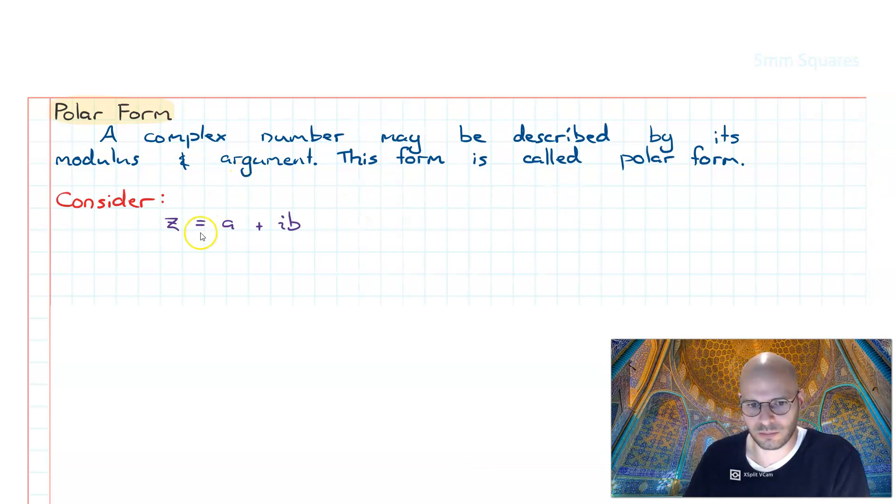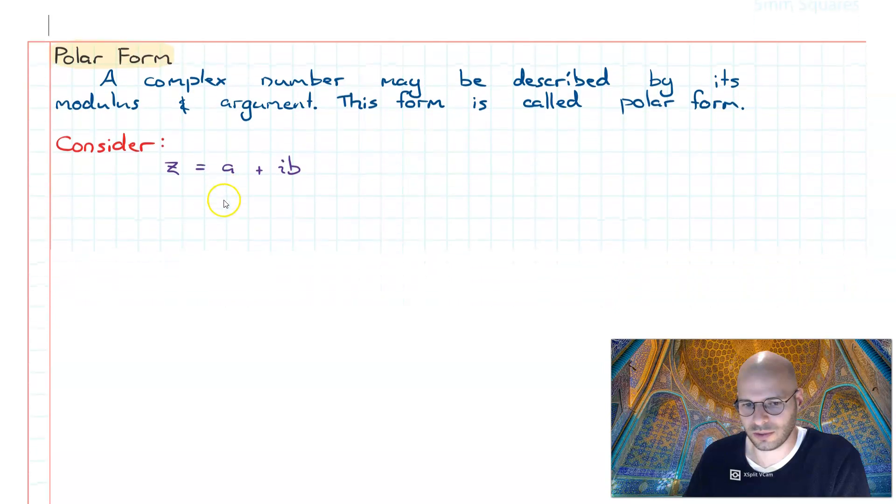Consider the complex number z equals a plus ib. This complex number is represented in its Cartesian form, also known as rectangular form. It's defined by having a real component a and an imaginary component b. We can represent this number using polar form, which represents the number using its modulus and its argument.